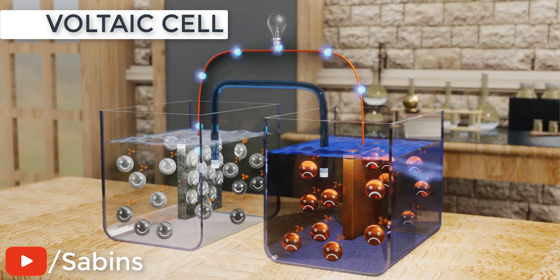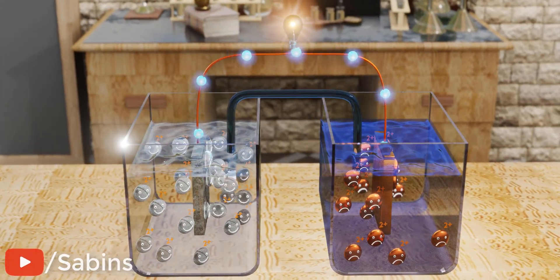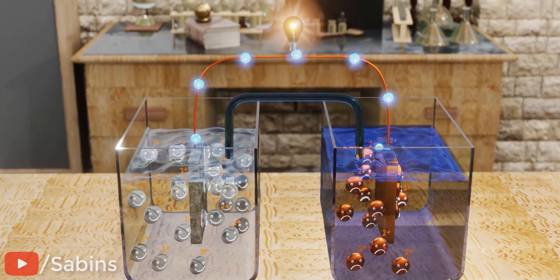The galvanic or voltaic cell is the most easy and fundamental cell to understand. Let's take a look at this animation to see how this cell produces a voltage and current flow.